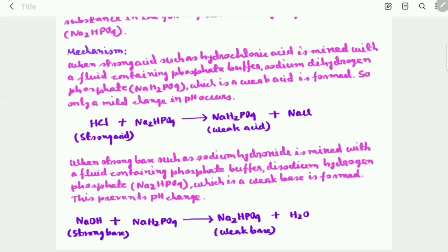When strong base such as sodium hydroxide is mixed with a fluid containing phosphate buffer, disodium hydrogen phosphate Na2HPO4, which is a weak base, is formed. So this prevents pH change.